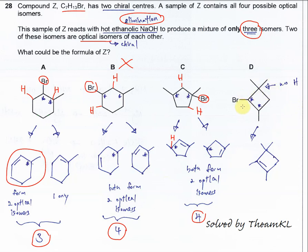For option D, the bromine can only be removed with this hydrogen because the adjacent carbon has no hydrogen. So elimination forms only this one compound and it has no chiral center — just one isomer total. Therefore, the confirmed answer is A.